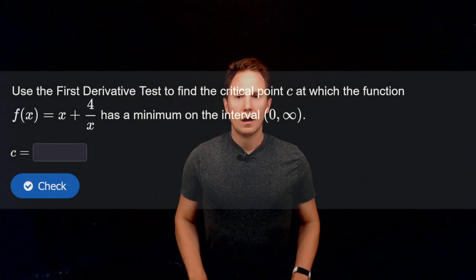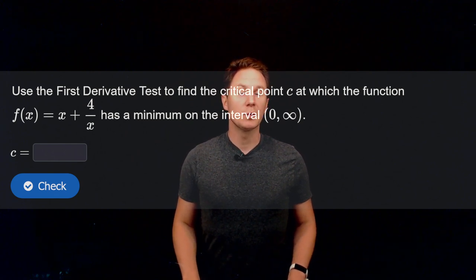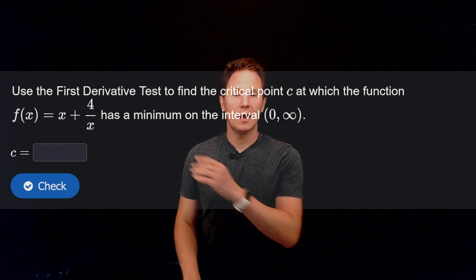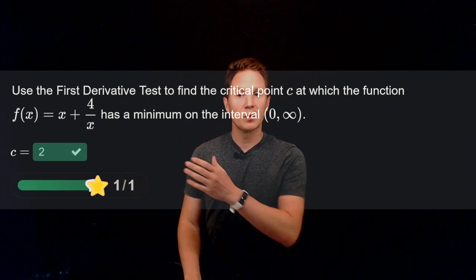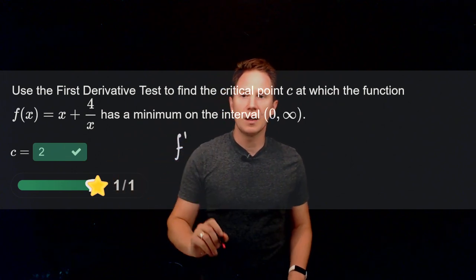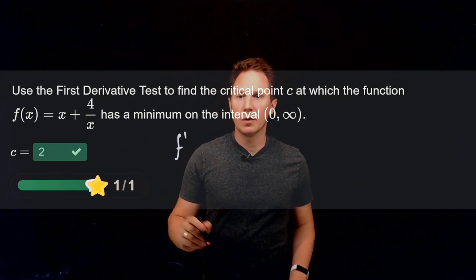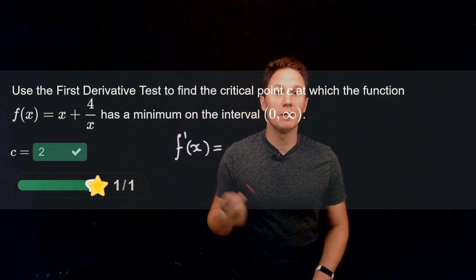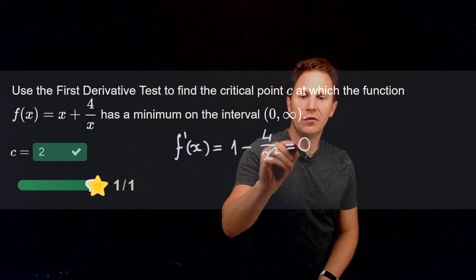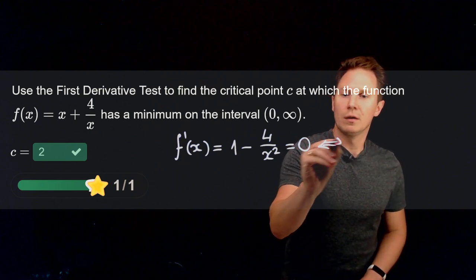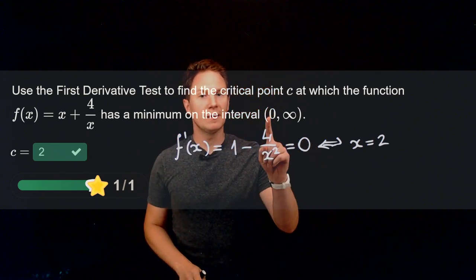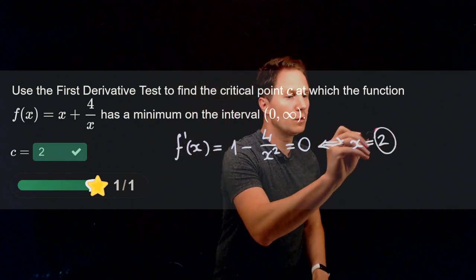Use the first derivative test to find the critical point c at which the function f(x) = x + 4/x has a minimum on the interval (0, ∞). The answer is c = 2. This function has a derivative at every point on that open interval, so we need to find where the derivative vanishes. The derivative is 1 - 4/x², which equals 0 if and only if x² = 4, so x = 2. The solution x = -2 is not in the interval, so the only critical point is x = 2.